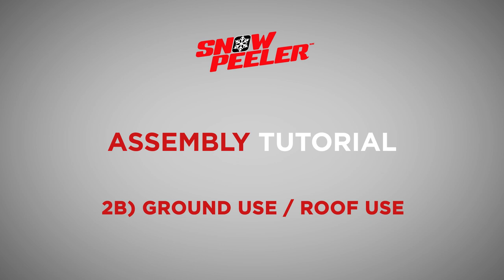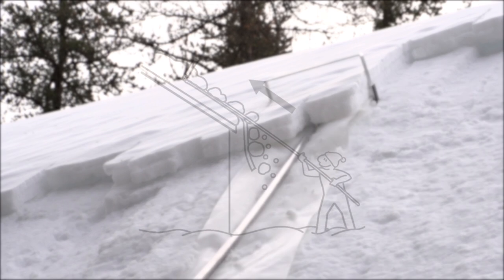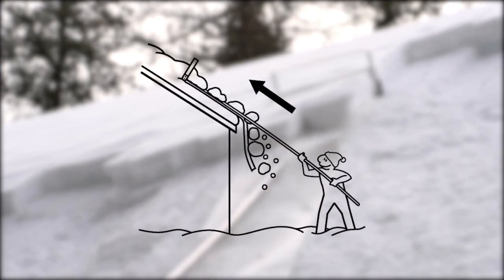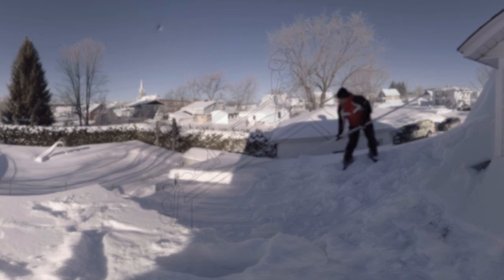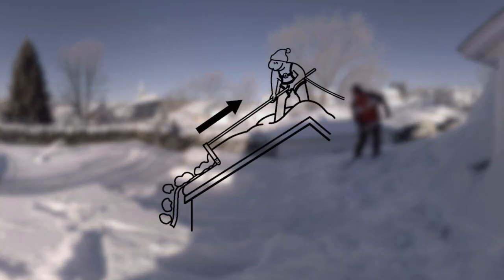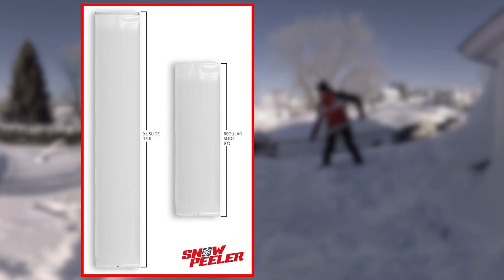Snow Peeler has a patented reversible cutting frame which allows it to be configured for two applications. With the most common application Snow Peeler is used while standing on the ground. The second configuration enables Snow Peeler to be used from the peak of the roof. For direct rooftop use it is strongly recommended to install the 15 foot excel slide which is included with Snow Peeler premium or can be purchased separately.